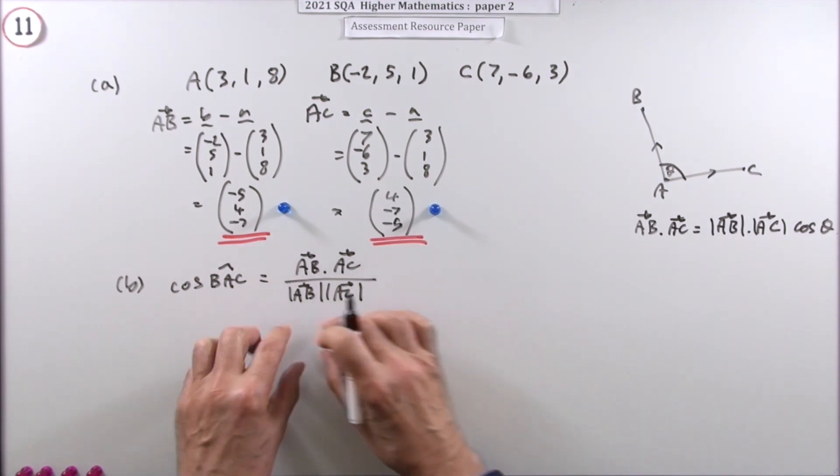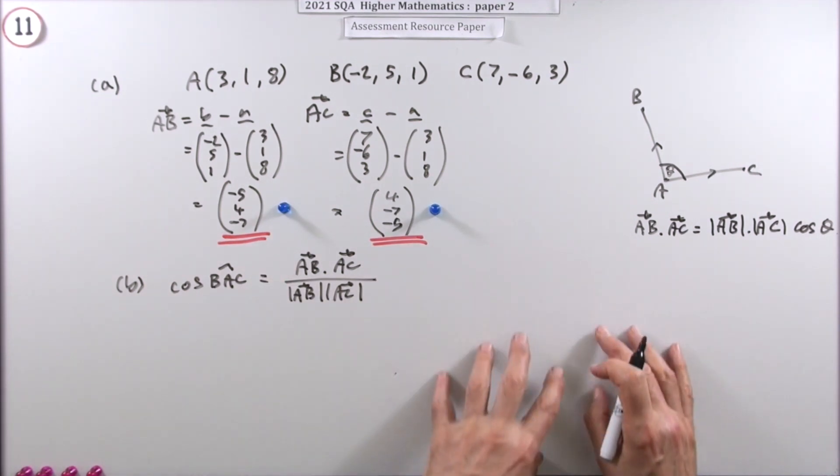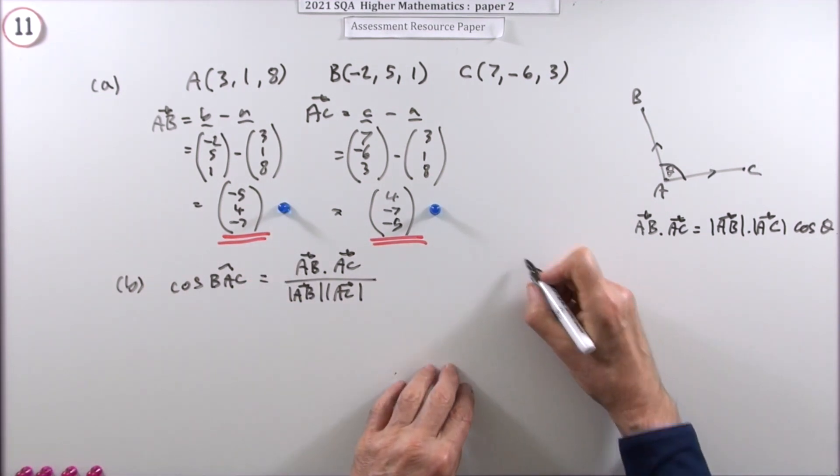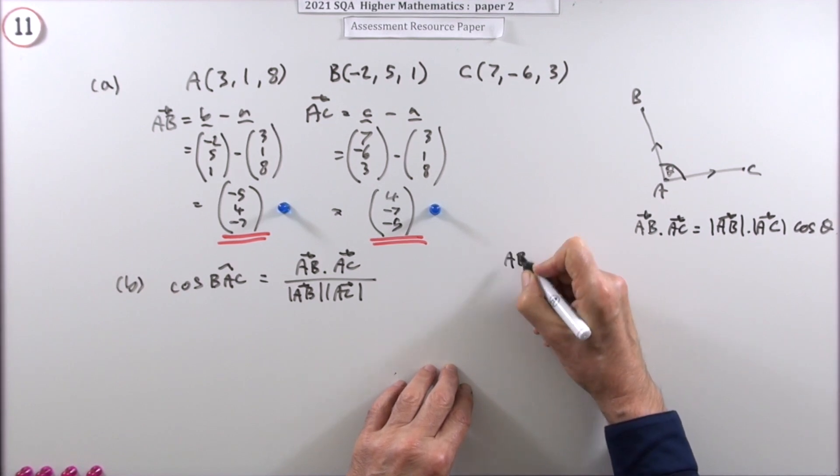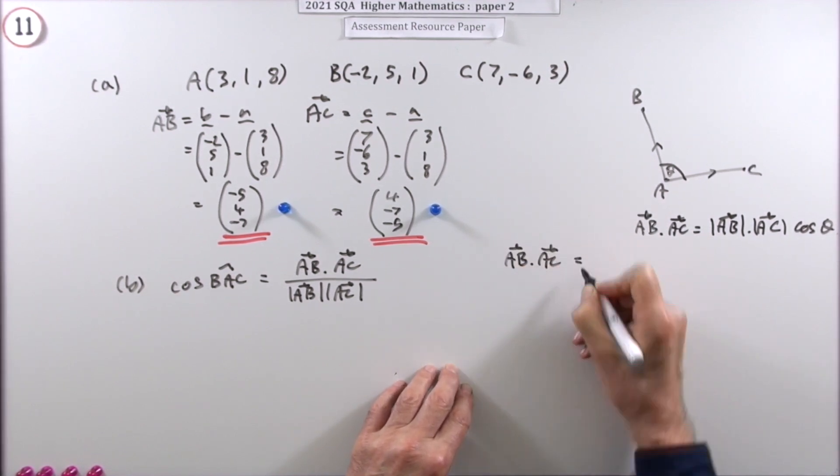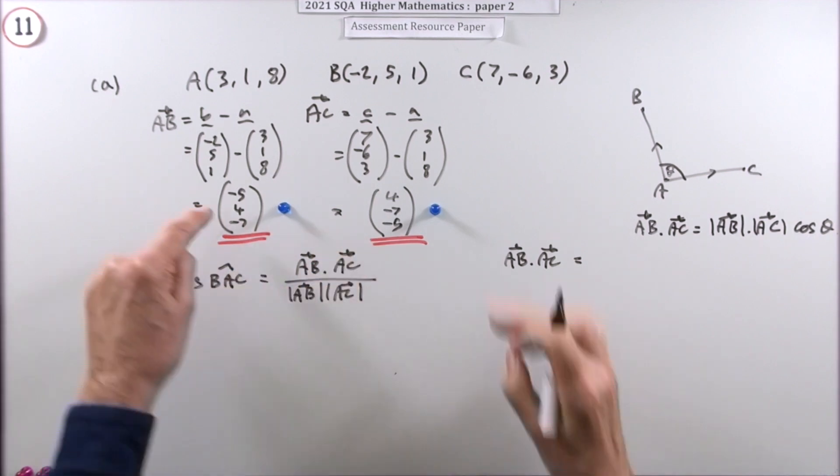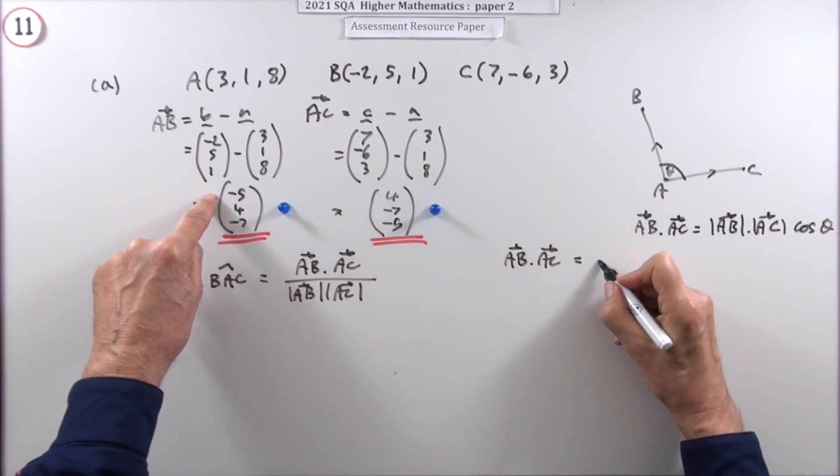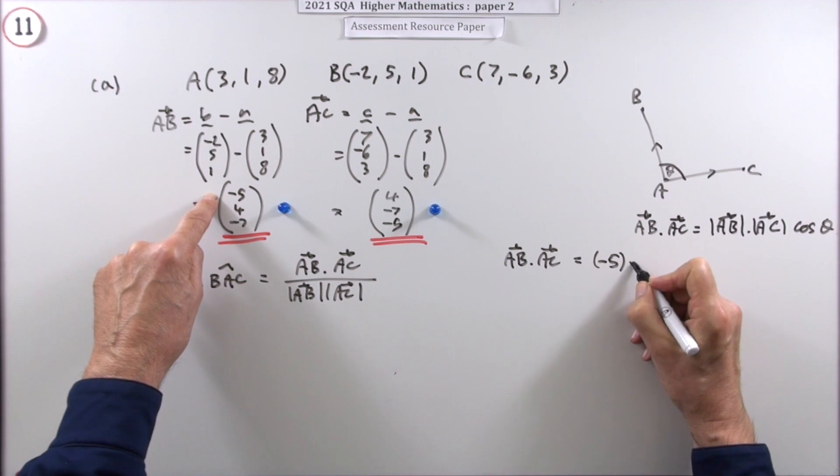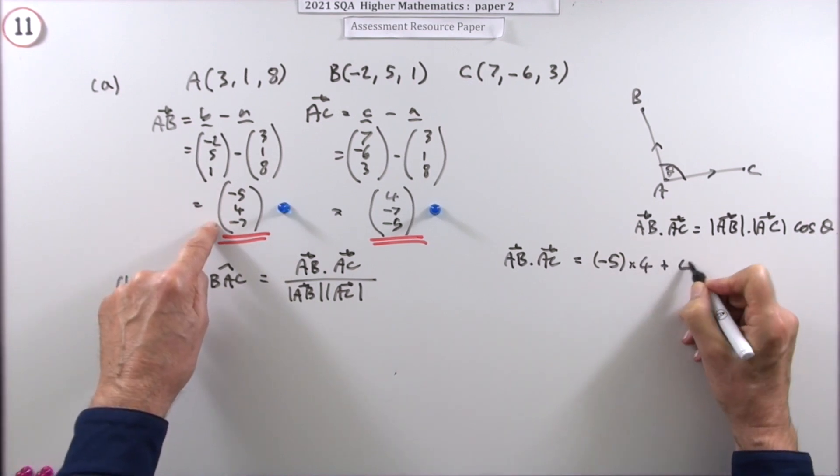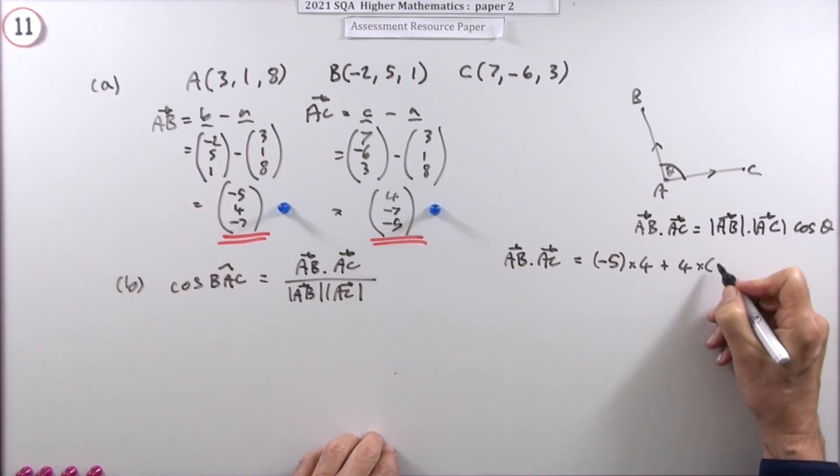You could feed it all into this in one calculation, or you could do the three parts separately. We'll do them separately at the side here. So what's AB dot AC? What is the scalar product of these two vectors? You multiply the corresponding components. It's -5 times 4. It's 4 times -7.